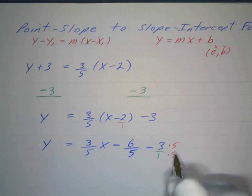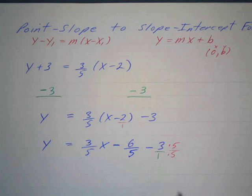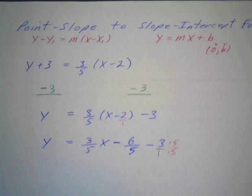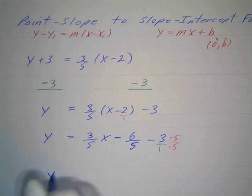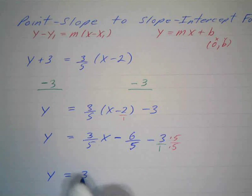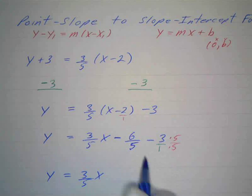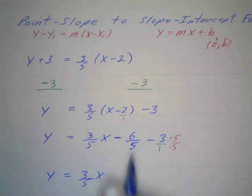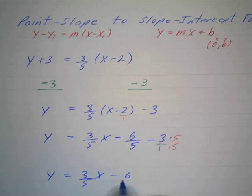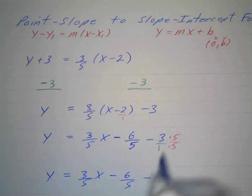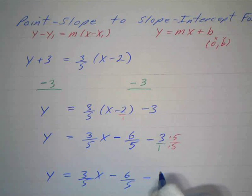Remember, 5 over 5 is 1, and we can multiply anything by 1, because sometimes we call this a unit fraction. We use unit fractions a lot. 5 over 5 is 1, so I can multiply anything by 1. So now I have y equals 3 over 5 x, and I have a negative 6 over—well, let me simplify this first—negative 6 over 5 and minus, and what's 3 times 5? 15 over 5.